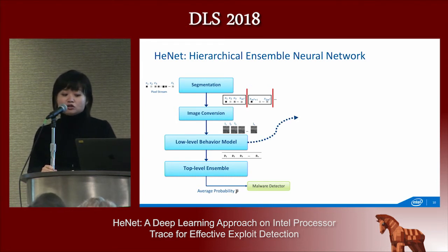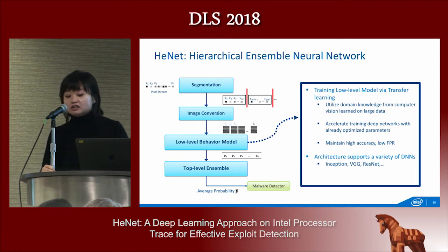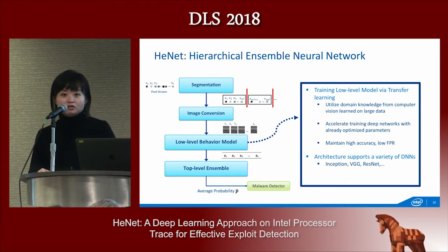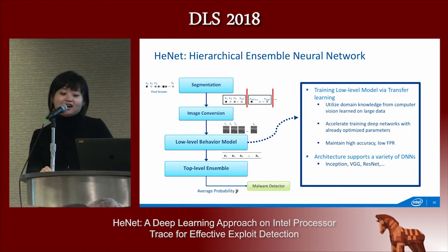In terms of training the low-level behavior model, Intel Processor Trace collects control flow packets, and depending on the granularity of sampling, it can produce a large amount of data. We train the low-level model via transfer learning. There are many advantages: we are treating this as a computer vision problem, so we borrow features learned from millions of natural images and fine-tune on our dataset, which is also represented as images. This accelerates training on our own dataset while maintaining high classification accuracy and low false-positive rate. Because of the transfer learning framework, we can support accelerated training of Inception, VGG, ResNet, and a variety of DNN architectures.